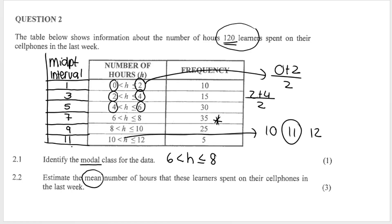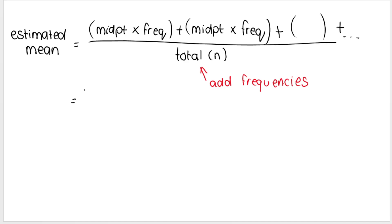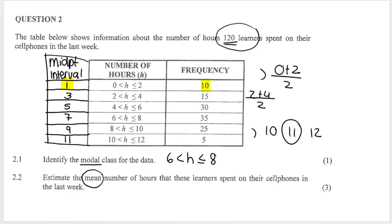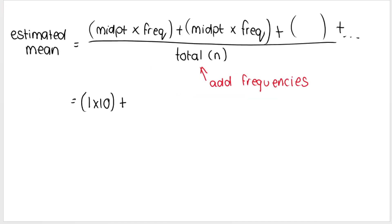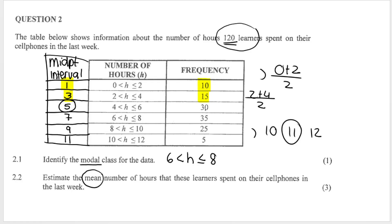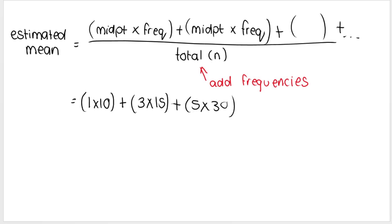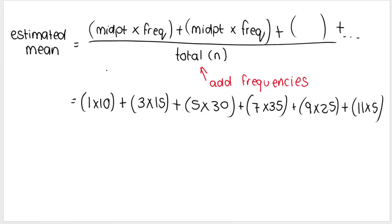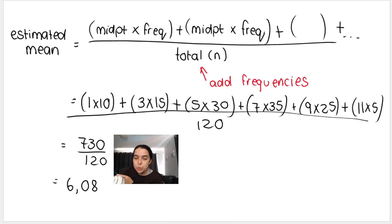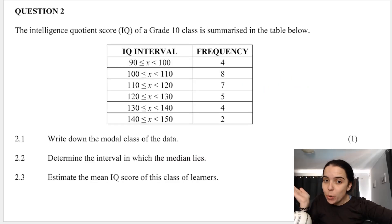Now we take the midpoint of the first interval multiplied by its frequency: 1 × 10, then 3 × 15, then 5 × 30, and so on for all six intervals. We divide by the total, which is 120. Typing it carefully into the calculator gives us 730 ÷ 120, which equals 6.08.